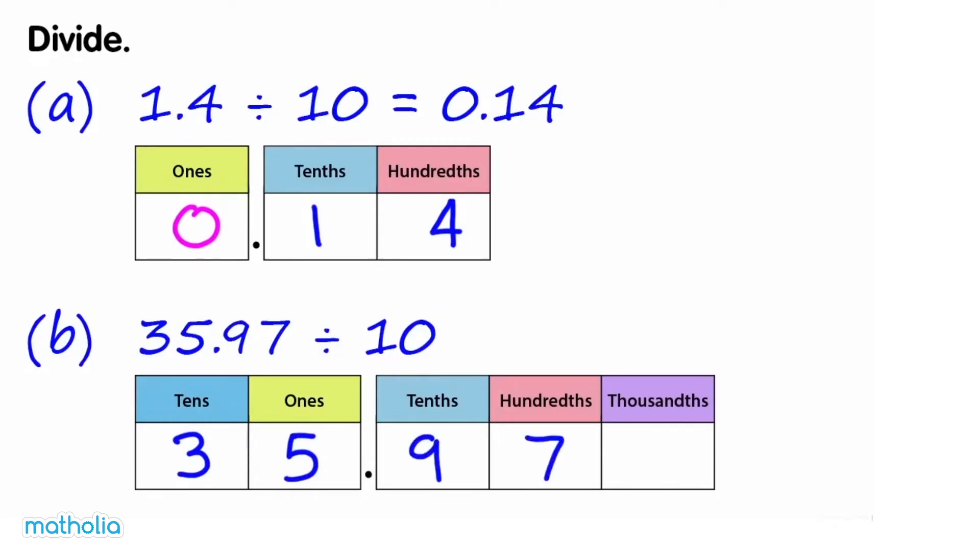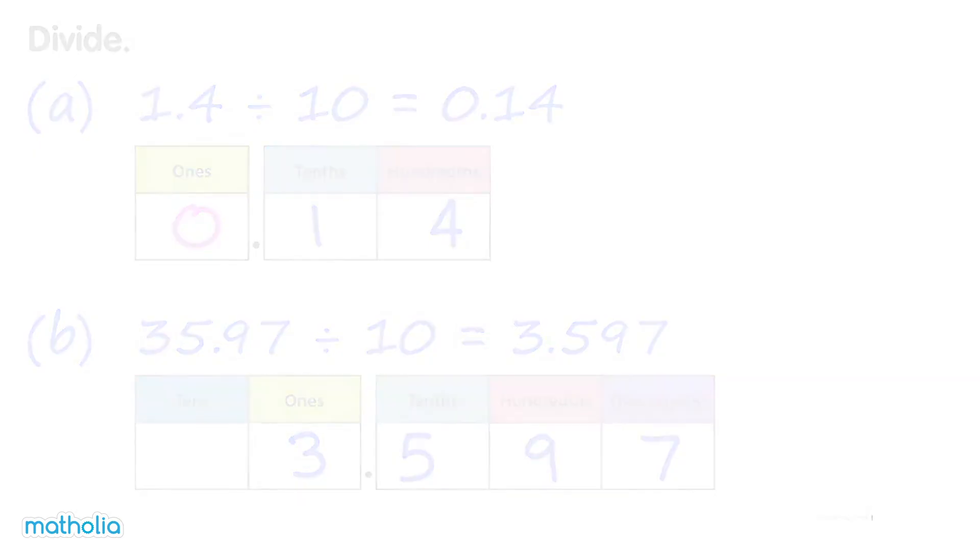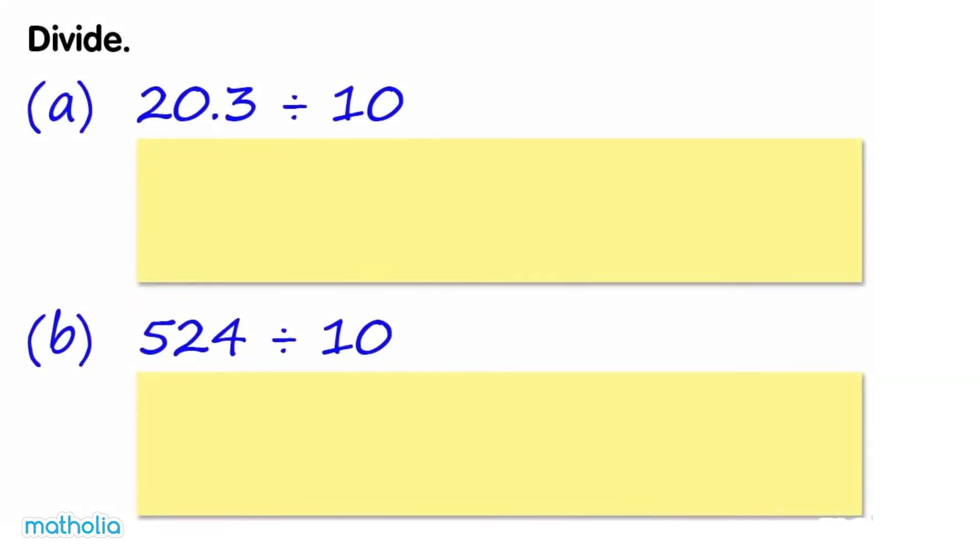value chart. Shift the digits one place value to the right. 35.97 divided by 10 equals 3.597.